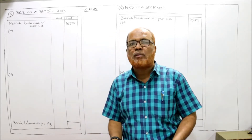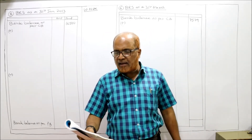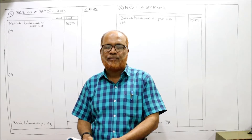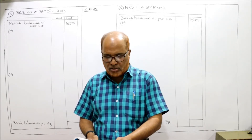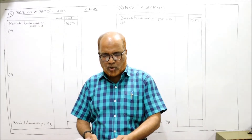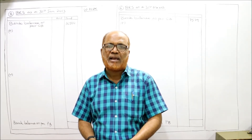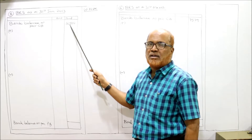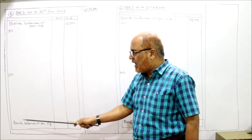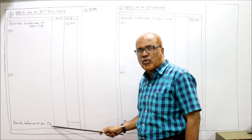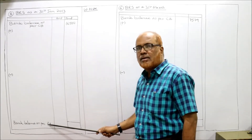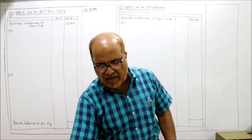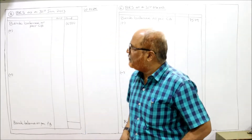I'm starting Problem Number Five: prepare the Bank Reconciliation Statement from the following on 31st January 2013. We are making the BRS on 31st January 2013. Bank balance as per cash book is 16,500. Our starting point is the bank balance as per cash book, and our ending point is the bank balance as per pass book. A few items will be added and a few deducted to arrive at the pass book balance.